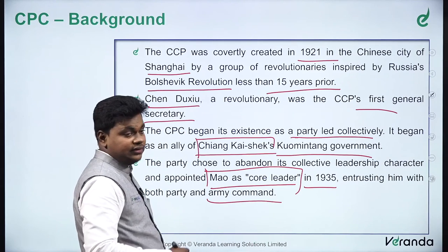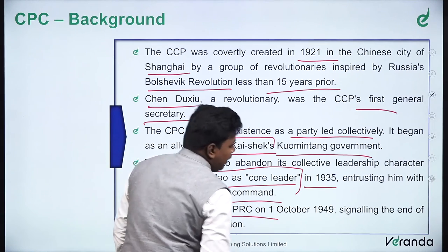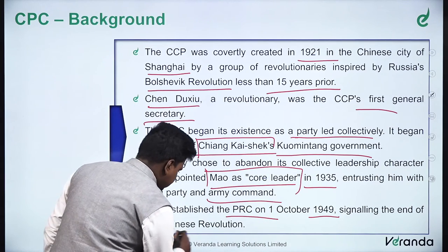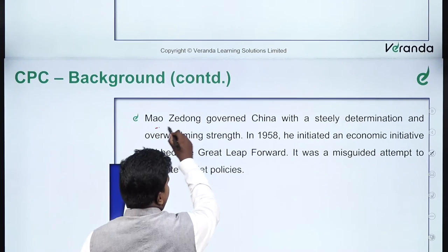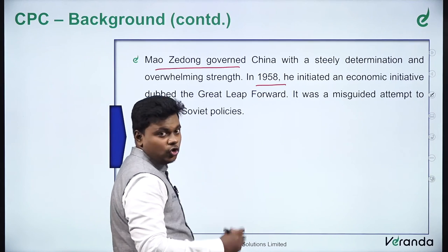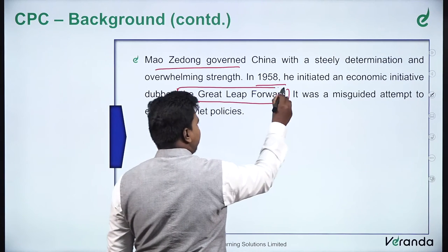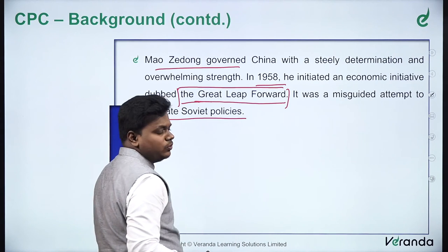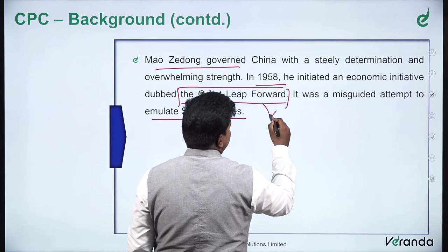Mao established the PRC after the civil war on 1st October 1949, signaling the end of the Chinese revolution. Mao Zedong governed China with steely determination and overwhelming strength. In 1958 he initiated an economic initiative called the Great Leap Forward, a misguided attempt to emulate Soviet policies. Eventually, the Great Leap Forward was dubbed a failure.